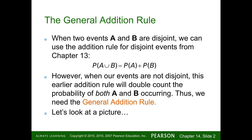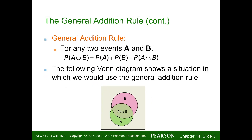However, when our events are not disjoint, the earlier addition rule will double count the probability for both A and B occurring. Thus, we need the general addition rule.